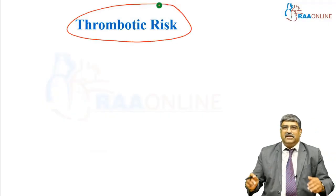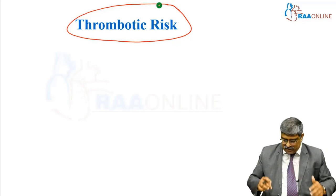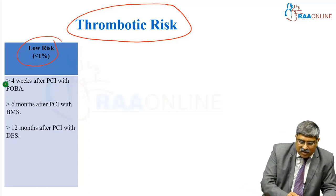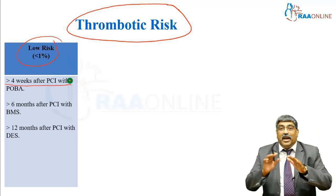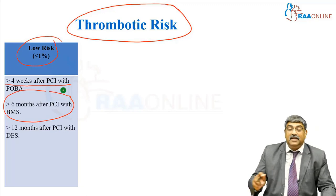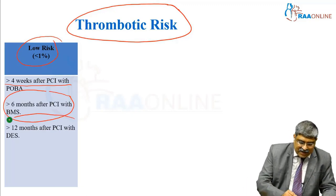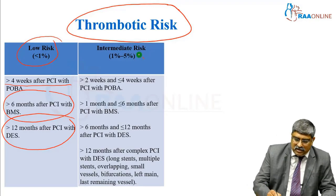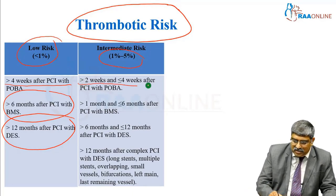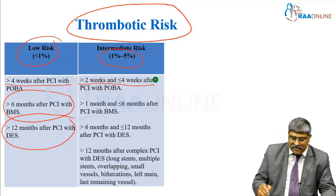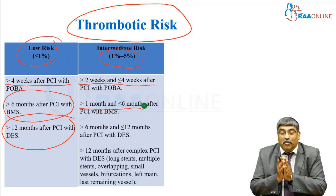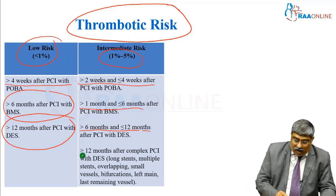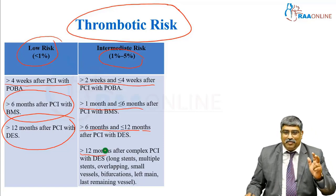What is the risk of thrombosis with regard to stent placement? The risk is low — less than 1% — after 4 weeks with plain balloon angioplasty, greater than 6 months with bare metal stent, or greater than 1 year with drug-eluting stent. Intermediate risk, between 1 to 5%, applies if the duration is greater than 2 weeks but less than 4 weeks with plain balloon angioplasty, greater than 1 month or less than 6 months after bare metal stenting, or greater than 6 months but less than 12 months with drug-eluting stent, or even after 1 year with complex PCI with drug-eluting stent.